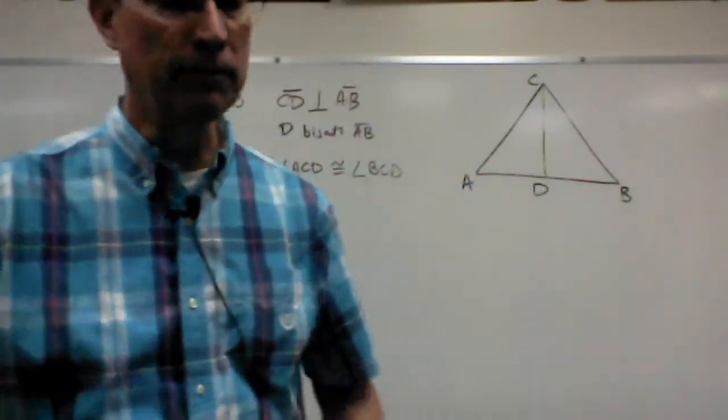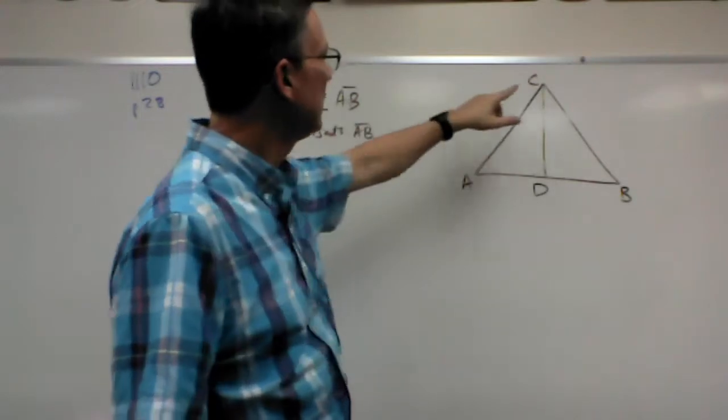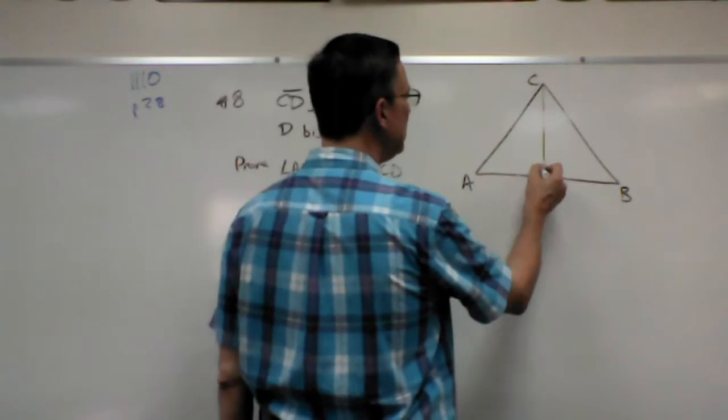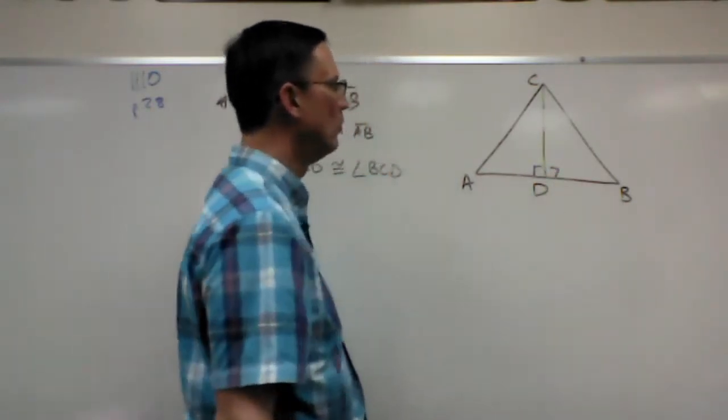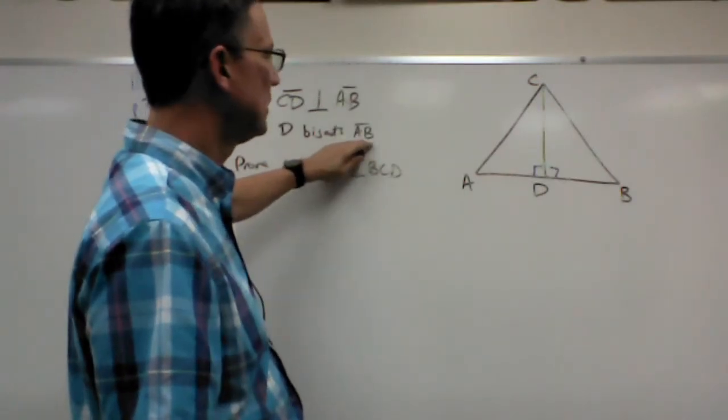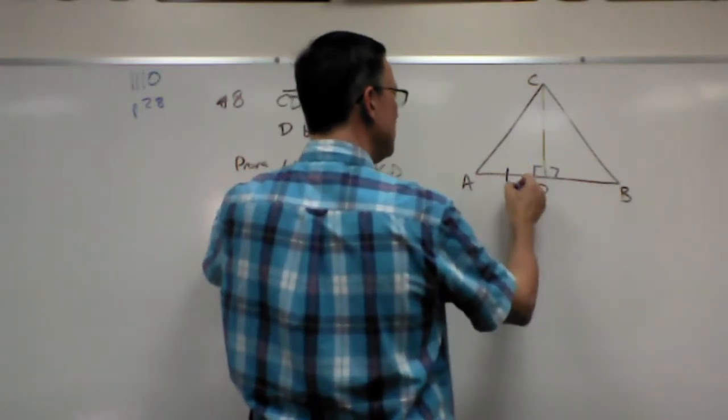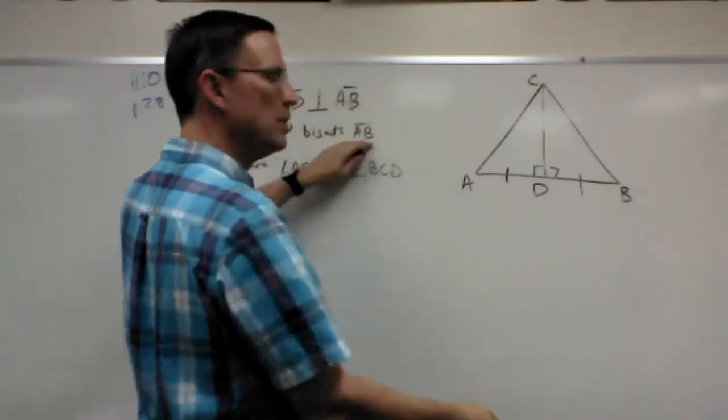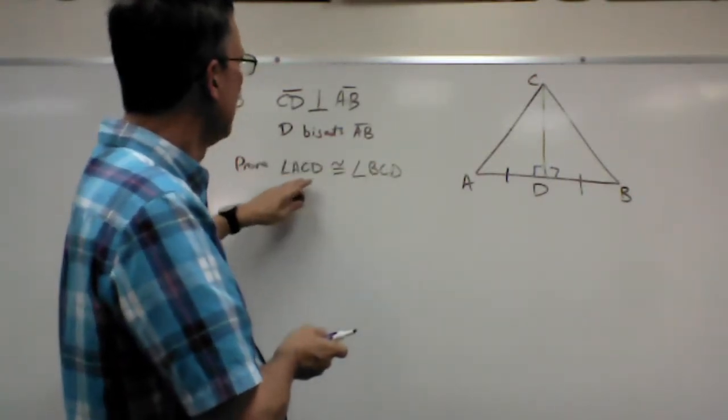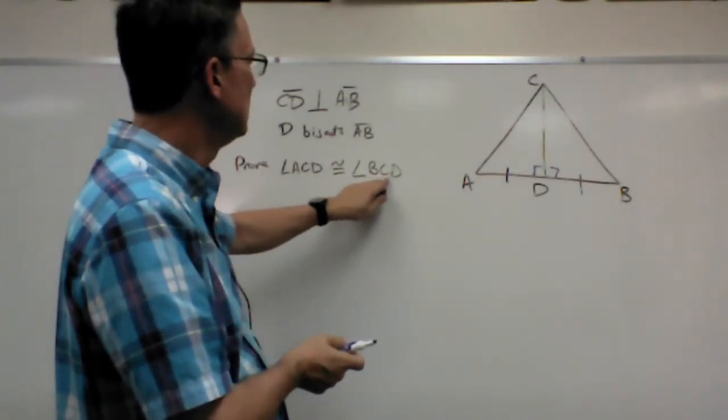CD is perpendicular to AB. So what do we know about that? Well, we can determine that these two are right angles. We'll need that. D bisects AB. If D bisects AB, then that tells me this is congruent to this. Now I haven't stated that formally yet, but I can tell that from this information.